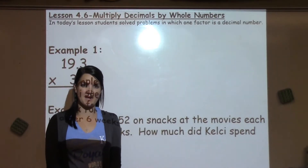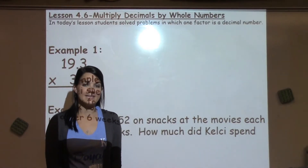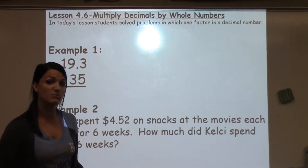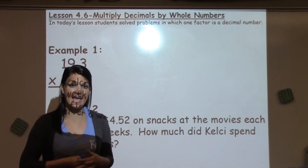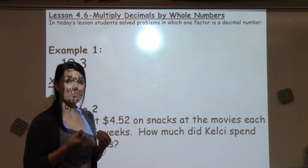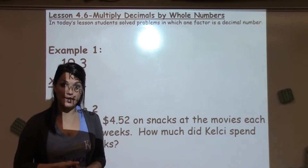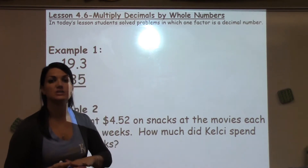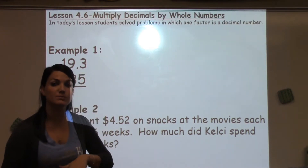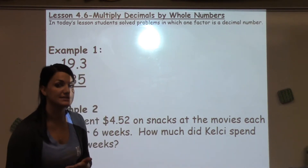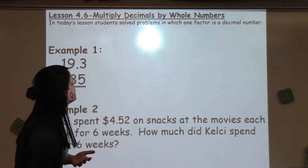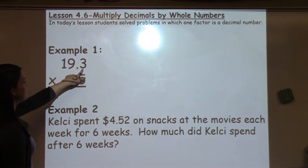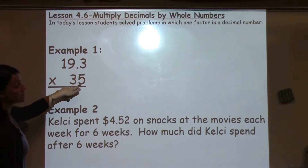Welcome to 4.6 Math Moment. Today's students continue to learn about multiplication strategies, but today they had one of their numbers as a decimal. We worked through some strategies on how to multiply with a decimal number. The first example is 19.3 times 35.